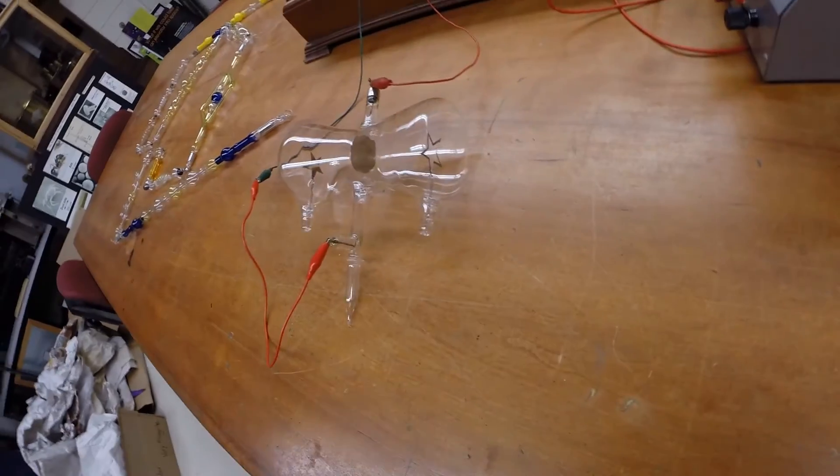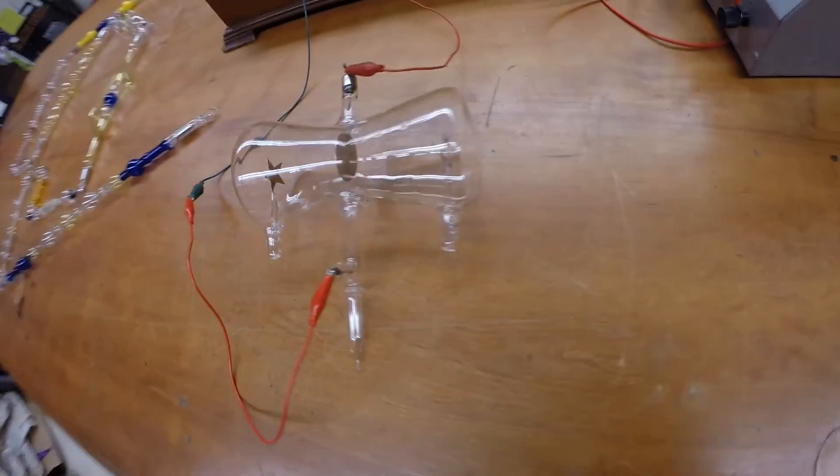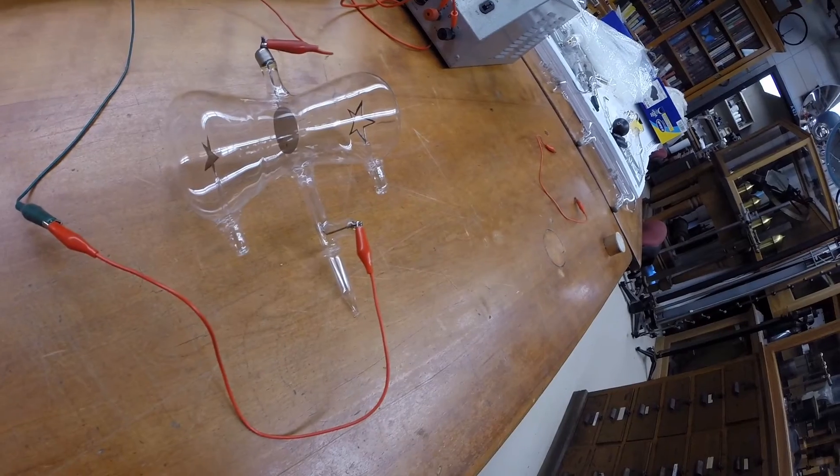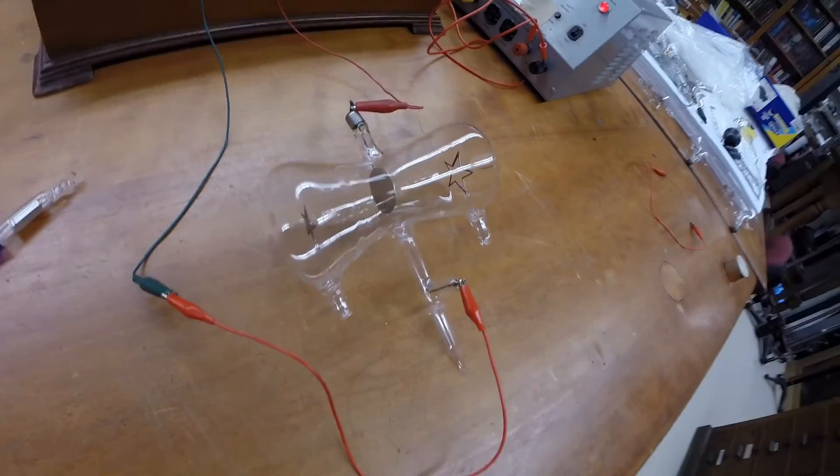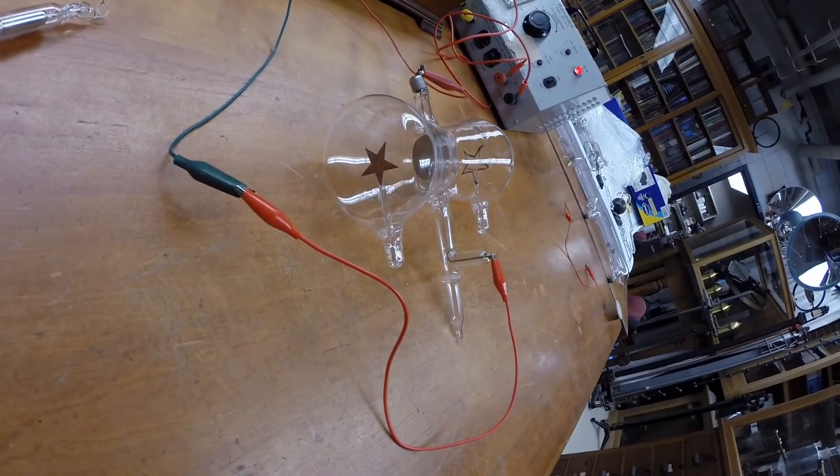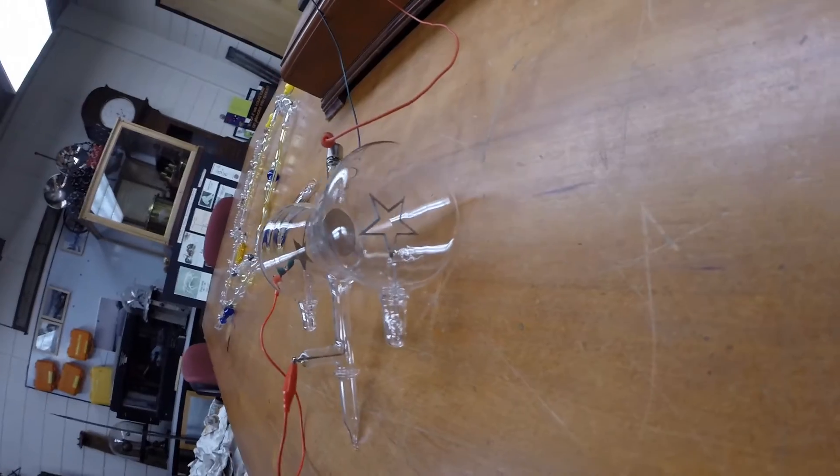Another Crooks tube, I believe it's called the double shadow effect. Basically the source of electrons is at the center of the tube, and you've got a solid star on one end and a hollow star on the other.